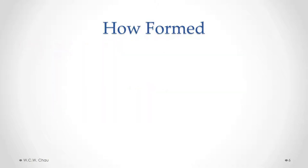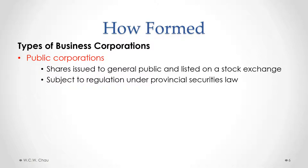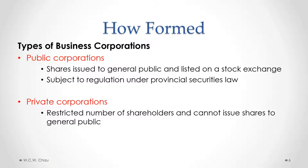There are generally two types of business corporations: public corporations and private corporations. Public corporations issue shares to the general public, and those shares are listed on a public stock exchange like the Toronto Stock Exchange, so any member of the public with a brokerage account can buy and sell those shares. Because the shares are available to the general public, public corporations are subject to an extra layer of government regulation under provincial securities law. Private corporations are essentially corporations whose shares are not listed on a public stock exchange, so the number of shareholders is usually much smaller, and generally a private corporation cannot issue shares to the general public.